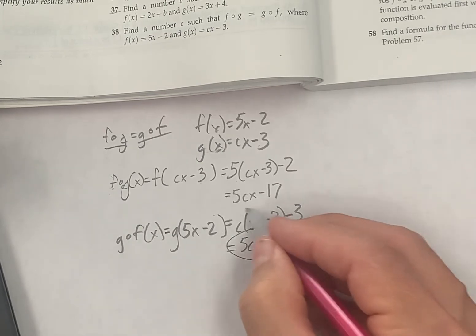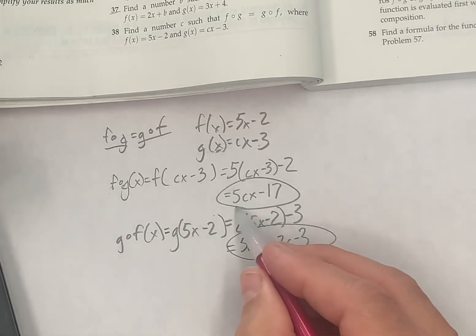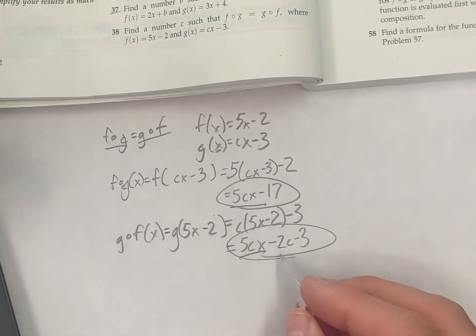Okay, so I need that to equal that. Right, well it's pretty clear that 5cx equals 5cx, so really what I need is I need negative 17 to equal negative 2c minus 3.